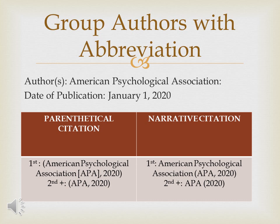On the other hand, in narrative citation for group authors with abbreviation, it looks like this: American Psychological Association, open and close parenthesis, with the abbreviation and date of publication inside the parenthesis — APA, 2020. That is for the first citation only. For subsequent citations, you just use the abbreviation APA, open and close parenthesis, 2020.